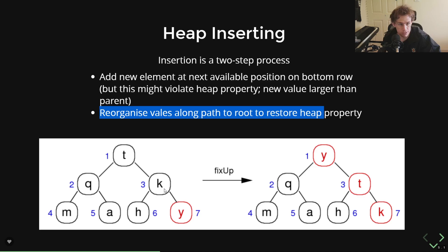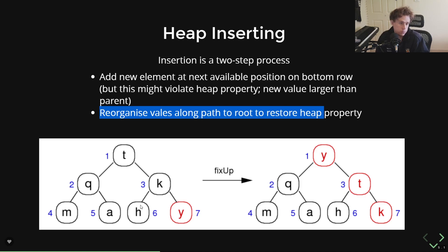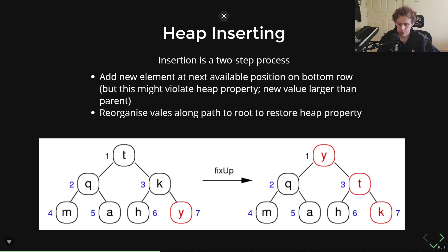Because Y is greater than K, it's in the wrong spot, so we swap Y with K. But then Y is still greater than T, so we have to swap again. So Y gets swapped up twice, and we end up with Y at the top of the tree. The time complexity of this is O(log n), because for any given node you just have to go up through its parents, which is log n steps for n nodes in the array.